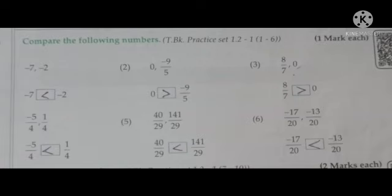Question 3: Compare the following numbers. (1) -7 and -2. So -7 is less than -2. (2) 0 and -9/5. A negative number is always less than 0, so 0 is greater than -9/5.